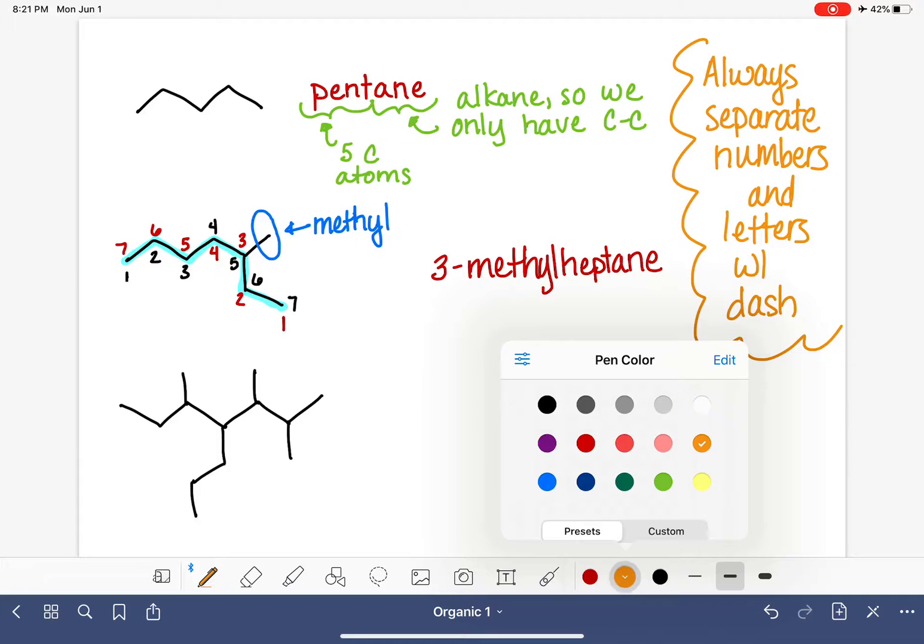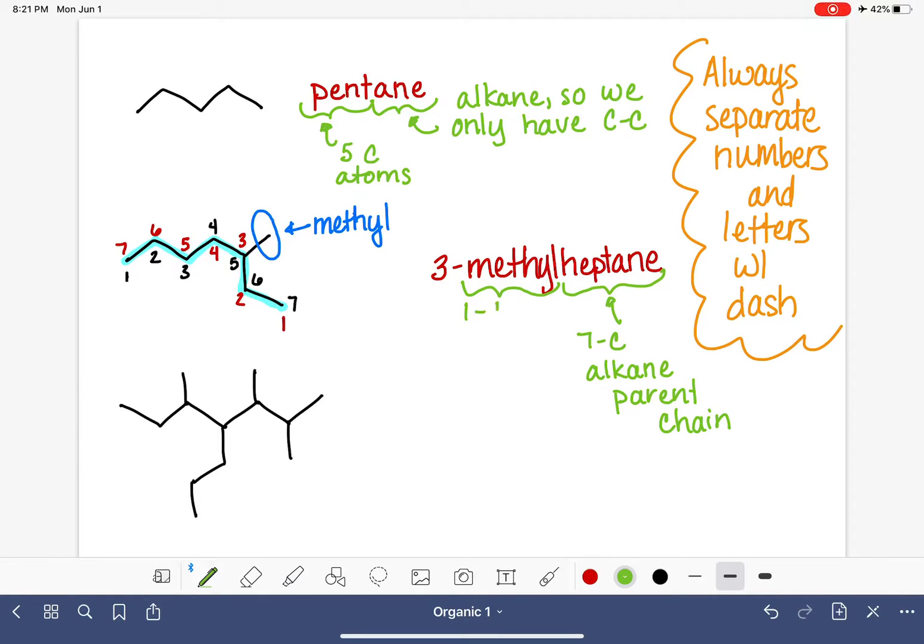So let's dissect this name like we did in the example up above. We have heptane, which tells us that this is a 7-carbon alkane parent chain. We have methyl, which tells us that we have a 1-carbon branch on the heptane. And we have 3, which is the location of the branch.